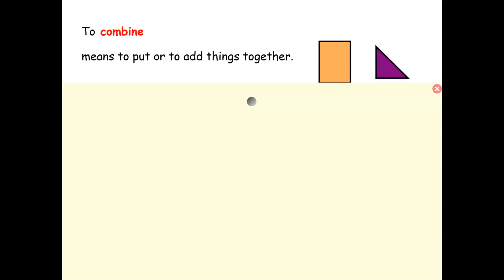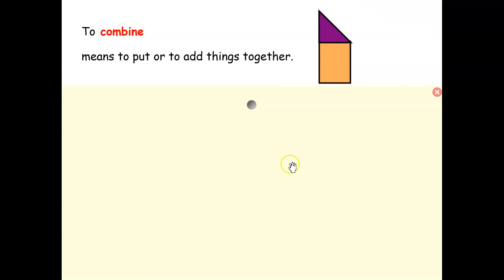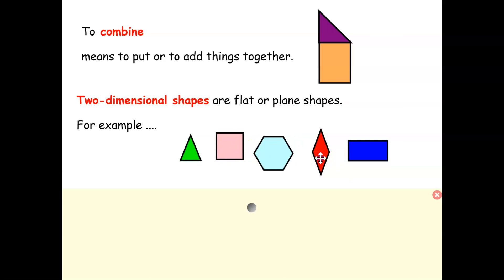What does combine mean? To combine means to put or to add things together. So when I combine shapes together, I could put them next to each other, or I can put one shape on top of another shape. Today we will combine two-dimensional shapes such as triangle, square, hexagon, diamond, and rectangle.